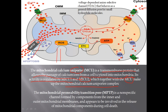Cytochrome c, which is present in the electron transport system, can get into the cytosol through this pore, triggering apoptosis — programmed cell death. Cytochrome c is released through the mitochondrial permeability transition (MPT) pore, a non-specific channel formed by components from the inner and outer mitochondrial membranes, involved in the release of mitochondrial components during cell death.